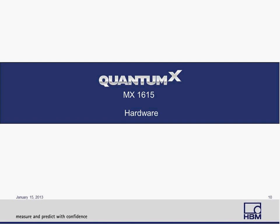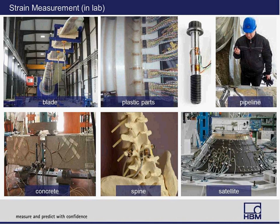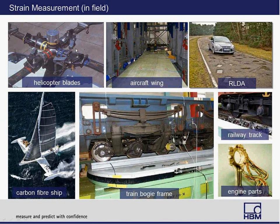The MX1615 hardware is currently used in various strain measurement applications. For laboratory measurements, it is used for wind blade testing, plastic part testing, gas pipeline and other pipeline testing, bolts, concrete, medical applications for spinal implants, and satellite technology. For field strain measurement, it is used in helicopter and aerospace blade testing, aircraft wings, road load data acquisition, the marine industry, frame and bogie frame testing, railroad track measurements, and automotive engine parts.